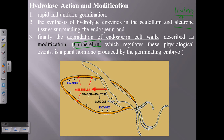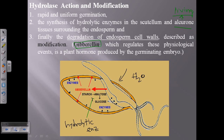As enzymes come out from the aleurone, gibberellin regulates everything. The enzymes degrade starch into maltose, and maltose is further broken down into glucose, which the embryo can readily take up — and the embryo starts to grow. That is the fundamental principle of malting: it is a germination process requiring water, which is why steeping requires 45% moisture.